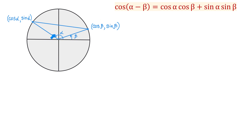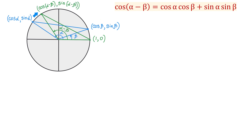In the next step, we will take this triangle and rotate it about the origin so that this side lies on the positive x-axis. Here we have the rotated triangle and as you see, it has exactly the same dimensions as the original triangle. In this triangle, the coordinates of this point are 1 and 0, because this is the x-axis and the unit circle has radius 1. The measure of this angle of the new triangle will be alpha minus beta, and this point corresponds to the coordinates cosine of alpha minus beta and sine of alpha minus beta.